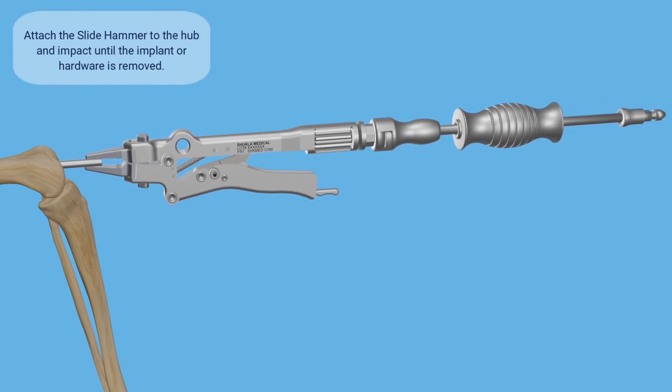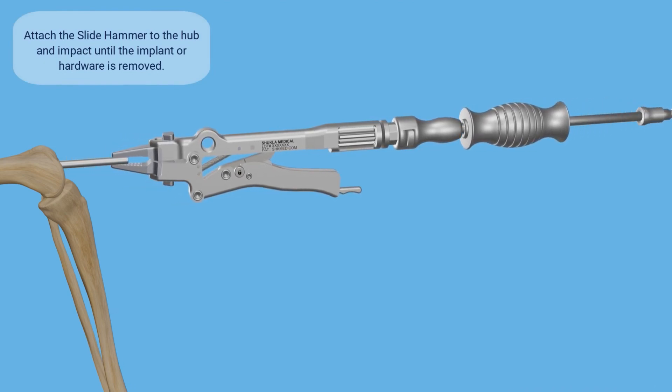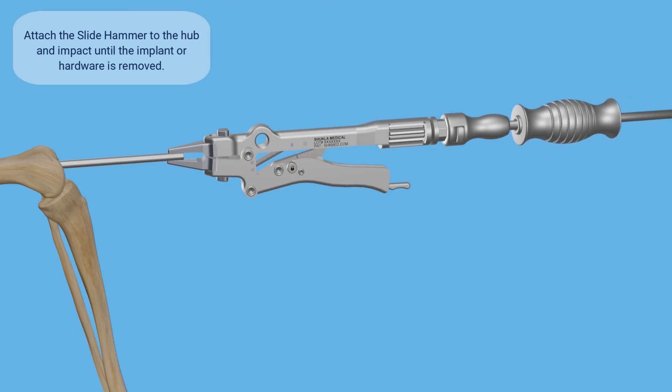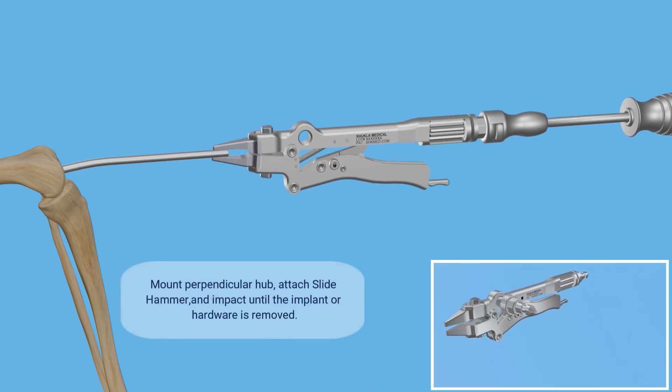The slide hammer connects quickly with the extractor allowing for rapid extraction. For perpendicular extraction, the slide hammer can be attached to the perpendicular hub.